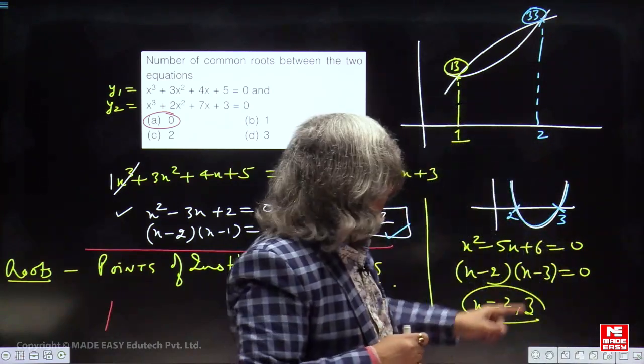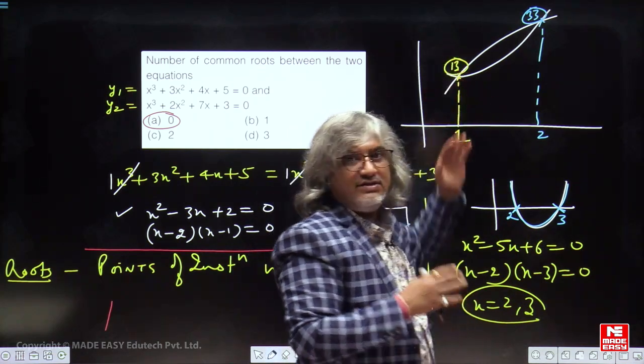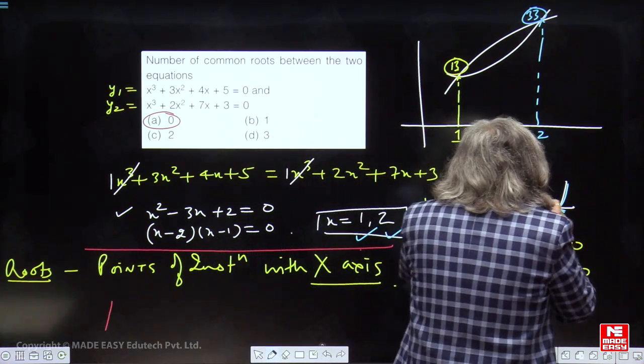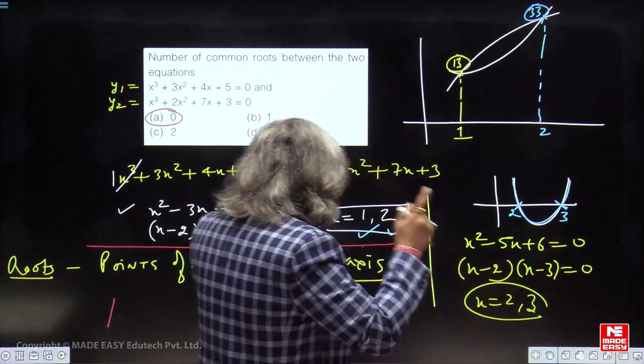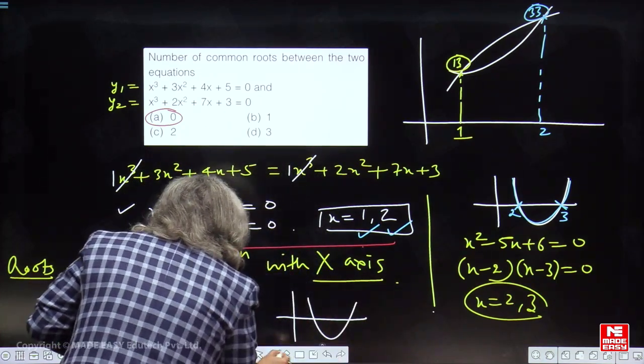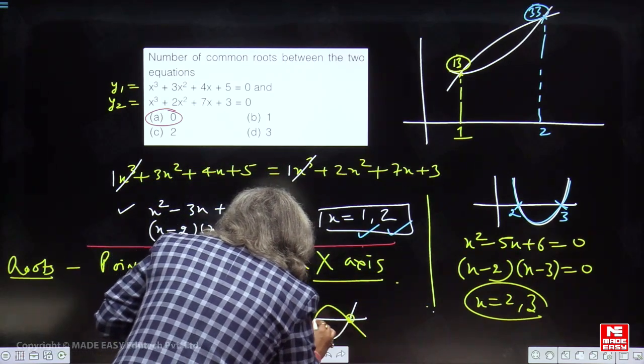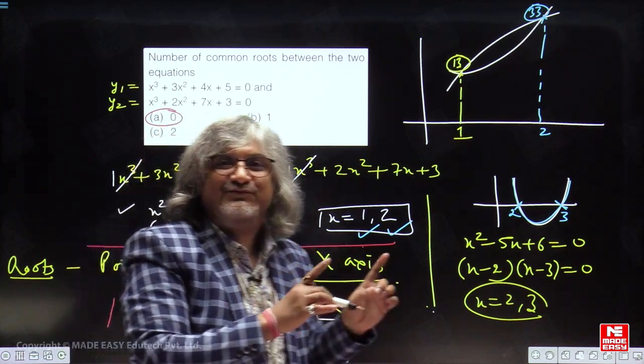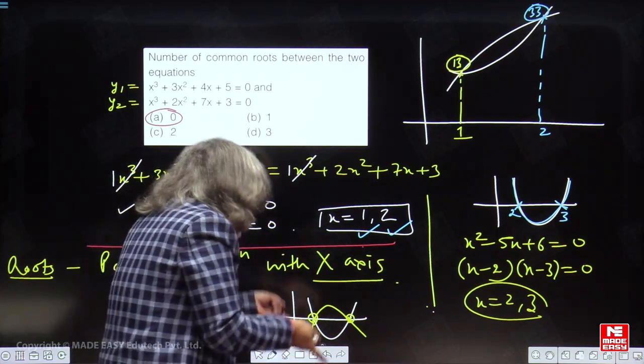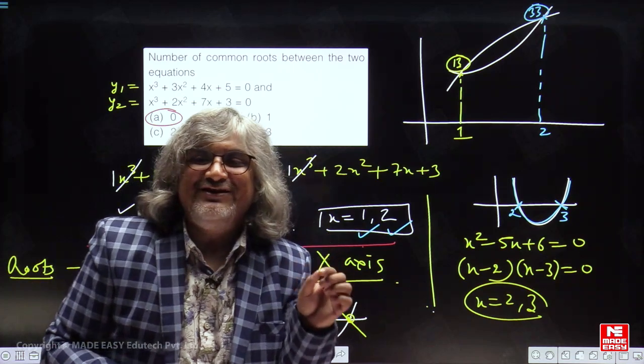Common roots ke liye kya hona chahiye? Intersection with x-axis hona chahiye. Here the curves are intersecting well above x-axis. They are happening, the intersection points is happening well above the ground. It should happen on the ground, then only we can say common roots. For example, common roots, suppose one curve is intersecting x-axis and the second curve also intersect x-axis simultaneously at those points, wherever the first curve was intersecting. This is the condition for the common roots. The point of intersection should happen on x-axis, simultaneously on x-axis. Then we can say it will be common roots.